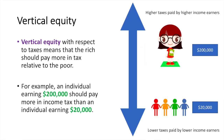Vertical equity with respect to taxes means that the rich should pay more in tax relative to the poor. For example, an individual earning $200,000 should pay more in income tax than an individual earning $20,000.